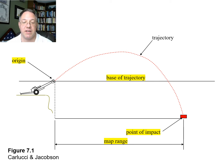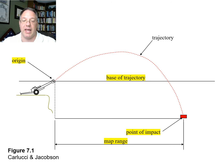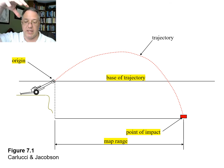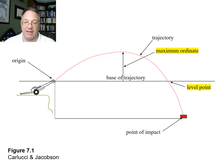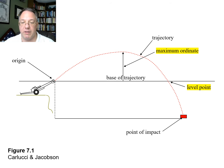The point of impact is where the projectile actually lands — it may or may not be on the base of trajectory, so you always have to account for that. The map range is the distance as if you were looking straight down at a map between the two points. The maximum ordinate is simply the highest point the trajectory reaches — somewhere along the flight path there's a maximum elevation the projectile passes through.